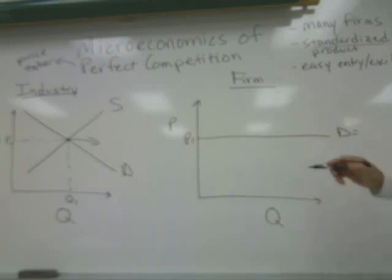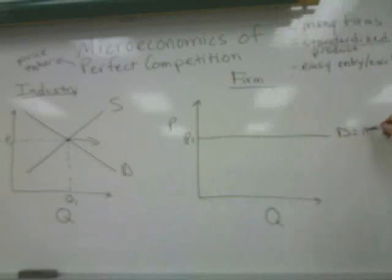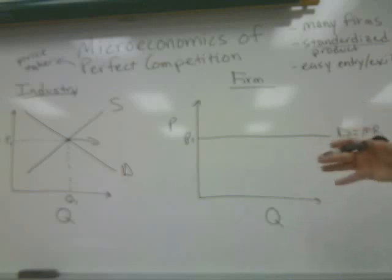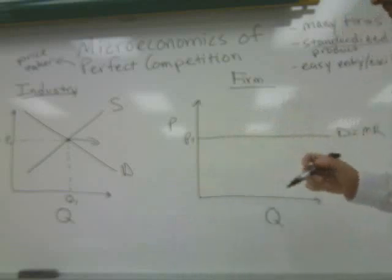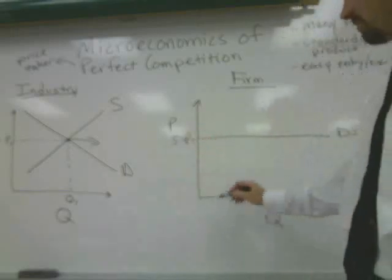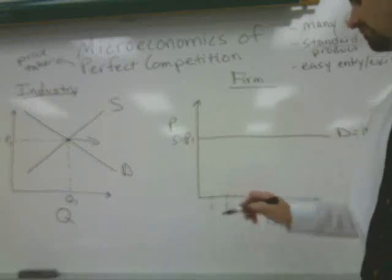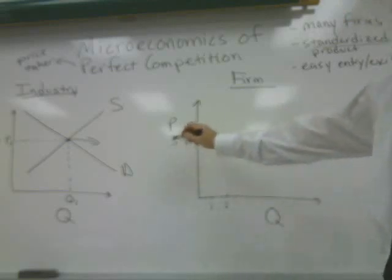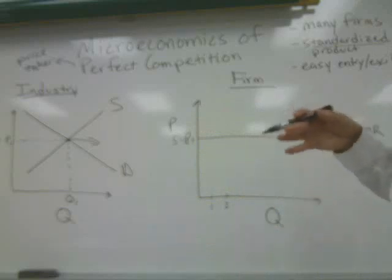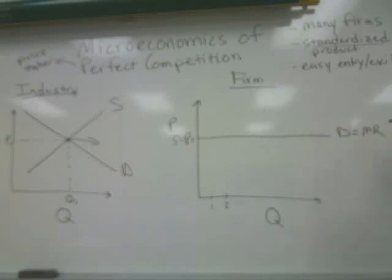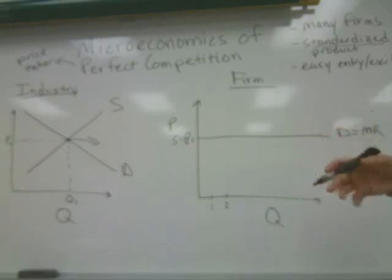Because the price level is the same across all quantities of output, the marginal revenue the firm receives from the sale of an additional unit will always equal the product price. For example, if the product price is $5, selling one unit yields $5 of revenue; selling two units yields $10 of total revenue. The extra revenue from the second unit is $5 — that is the marginal revenue, defined as the change in total revenue over the change in quantity.